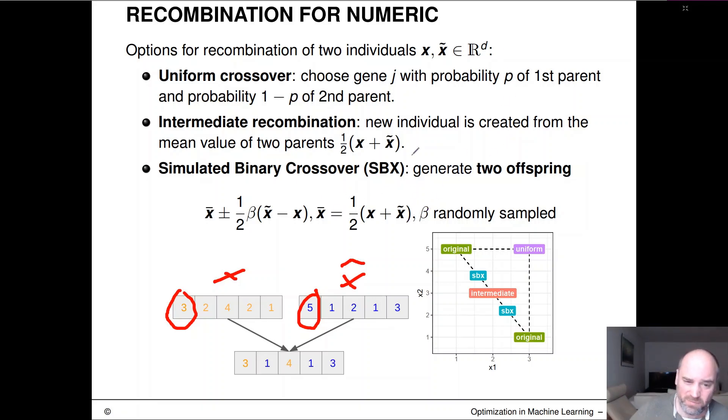There are also two more geometric inspired crossover operations which are pretty similar. So there's the intermediate recombination. So intermediate recombination simply adds up the two vectors and then constructs the middle point.